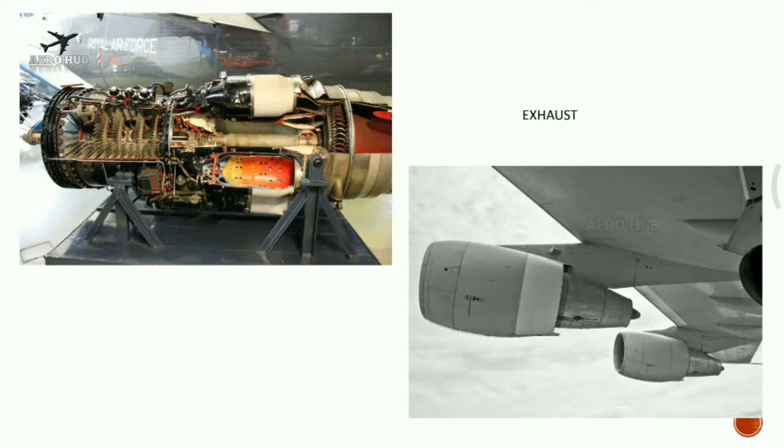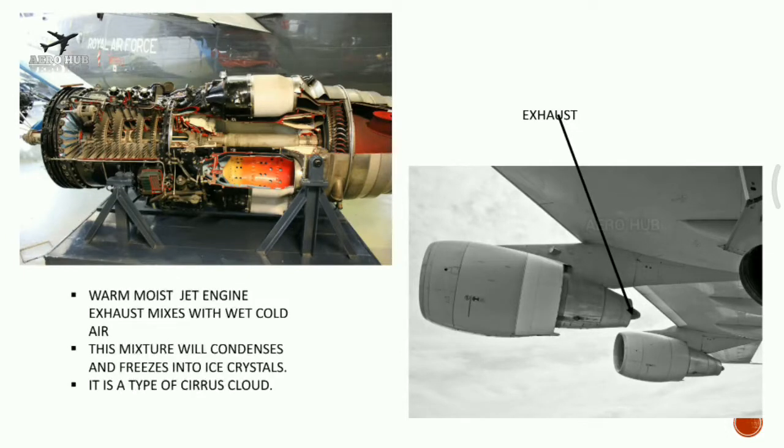Warm moist jet engine exhaust mixes with wet cold air. This mixture condenses and freezes into ice crystals. It is a type of cirrus cloud. Now you got the clear idea that the trails are not smoke, they are simply a type of cloud.